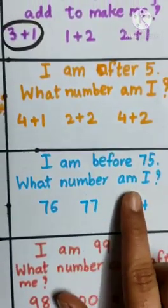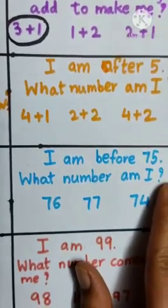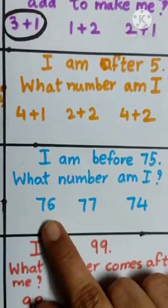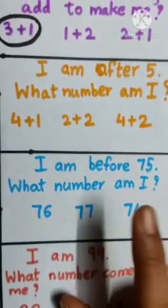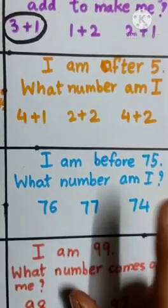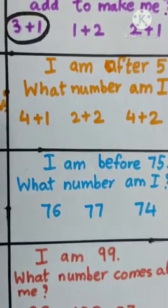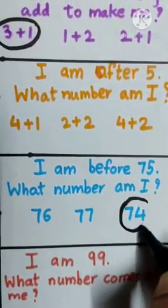I am before 75. What number am I? 75 se pehle konsa number aata hai? 76? No. It comes after 75. 77? It also comes after 75. And our last option is 74, and it comes before 75. So, circle 74.